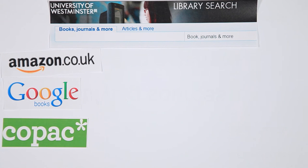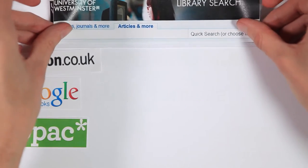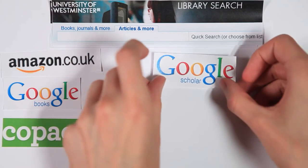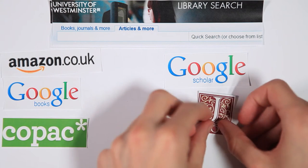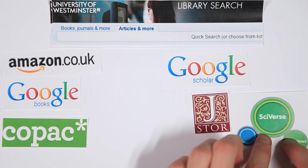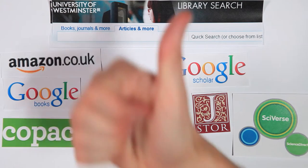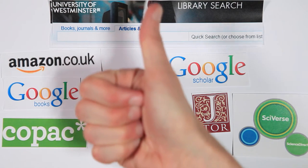For journal articles, Dave uses the article search provided by his library, Google Scholar and databases such as JSTOR and Science Direct. This should give Dave plenty of resources for his assignment.